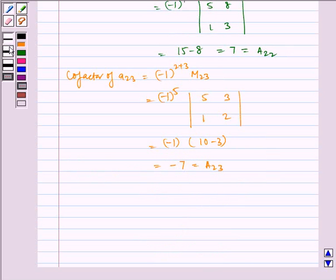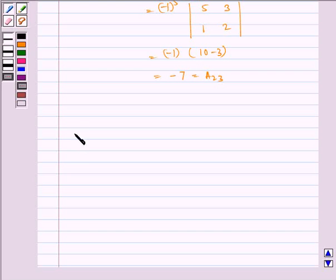Therefore now we will evaluate the determinant. It is equal to a21 A21 plus a22 A22 plus a23 A23, where small a is the element and capital A is the cofactor.